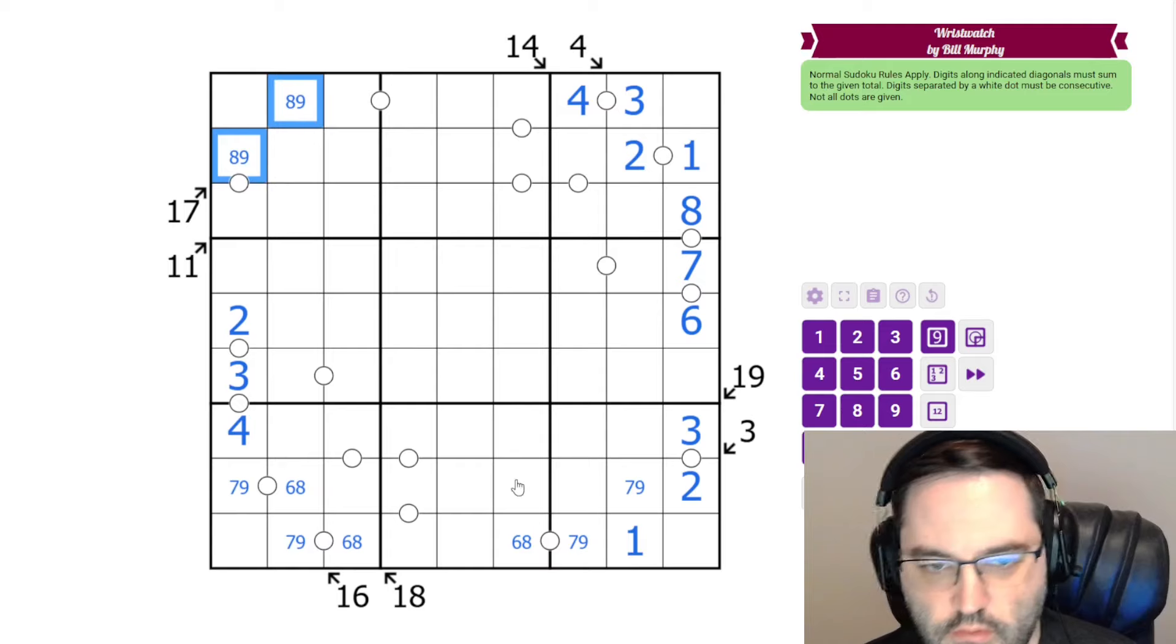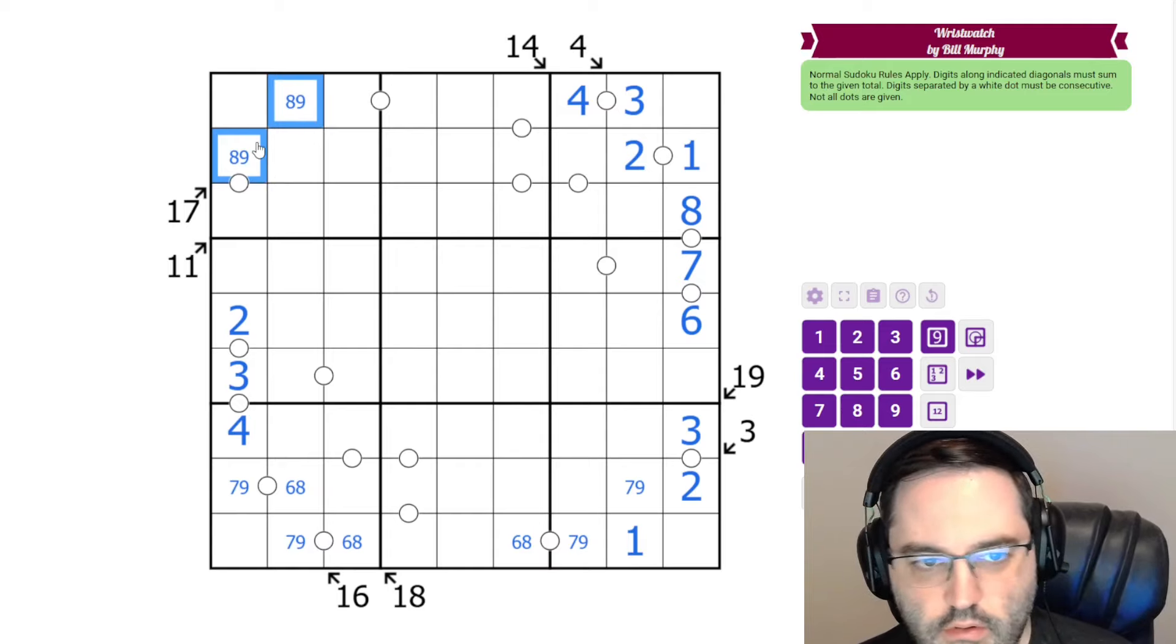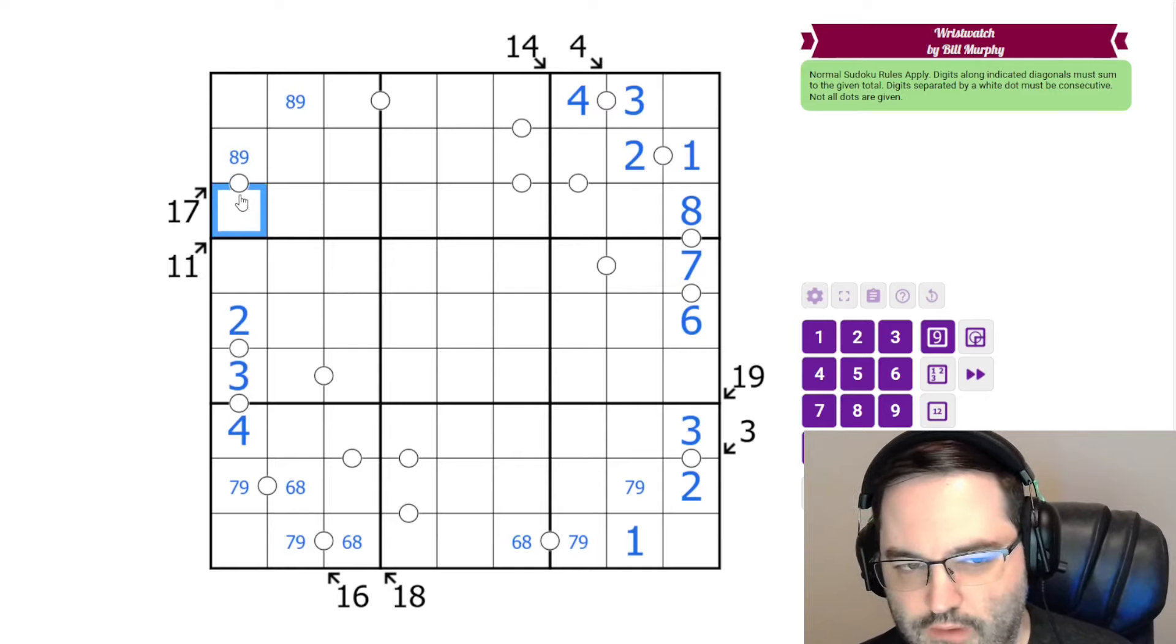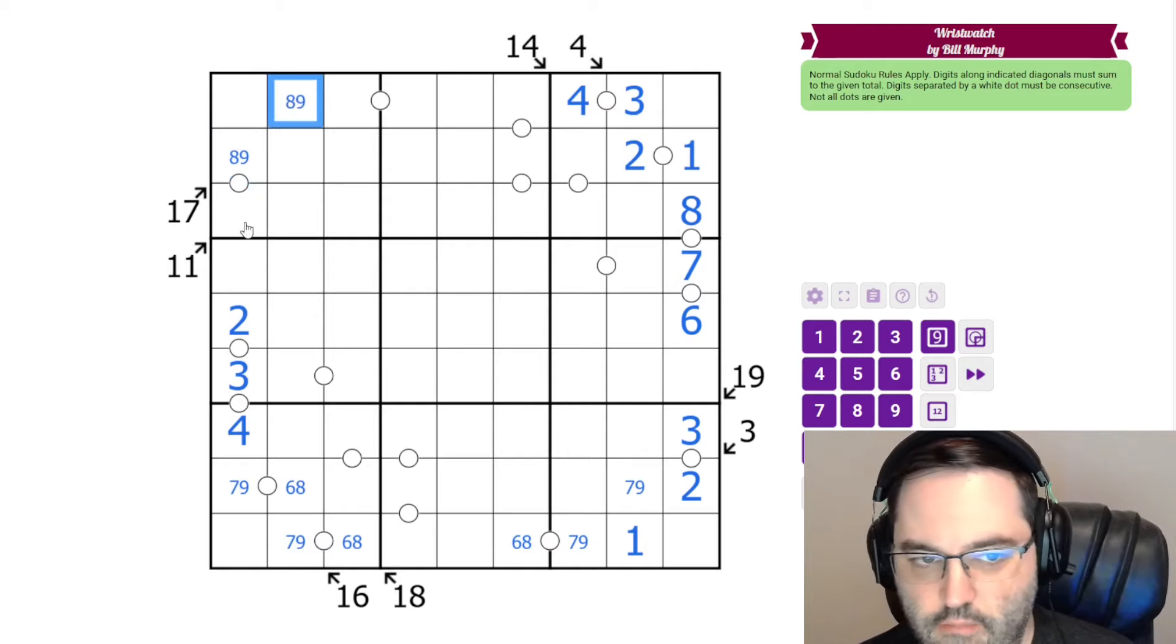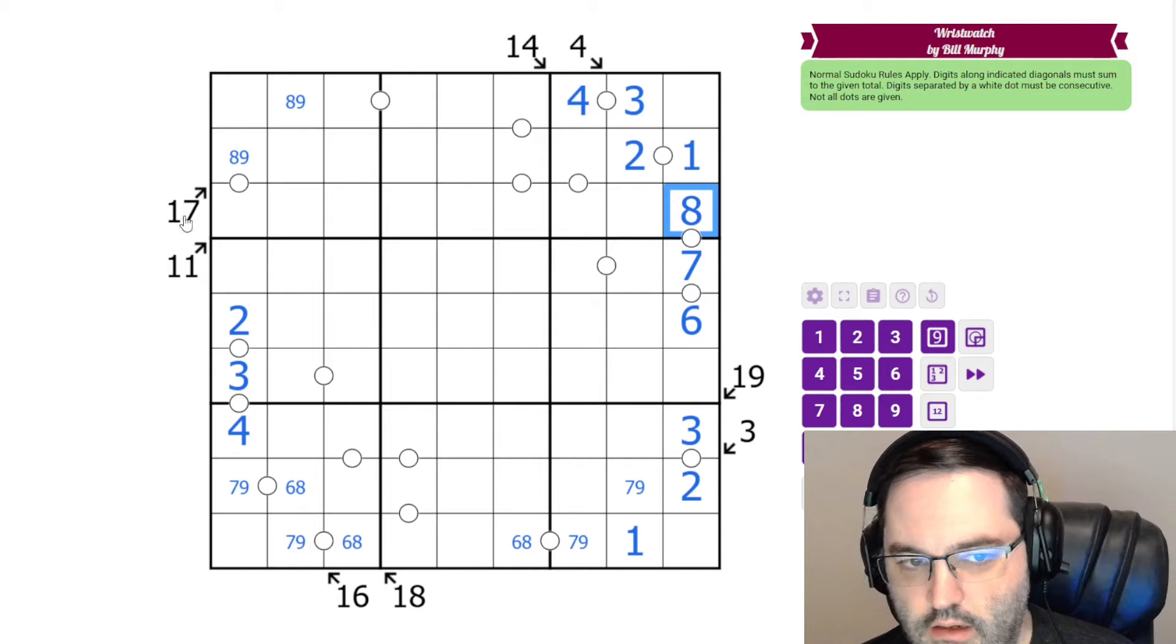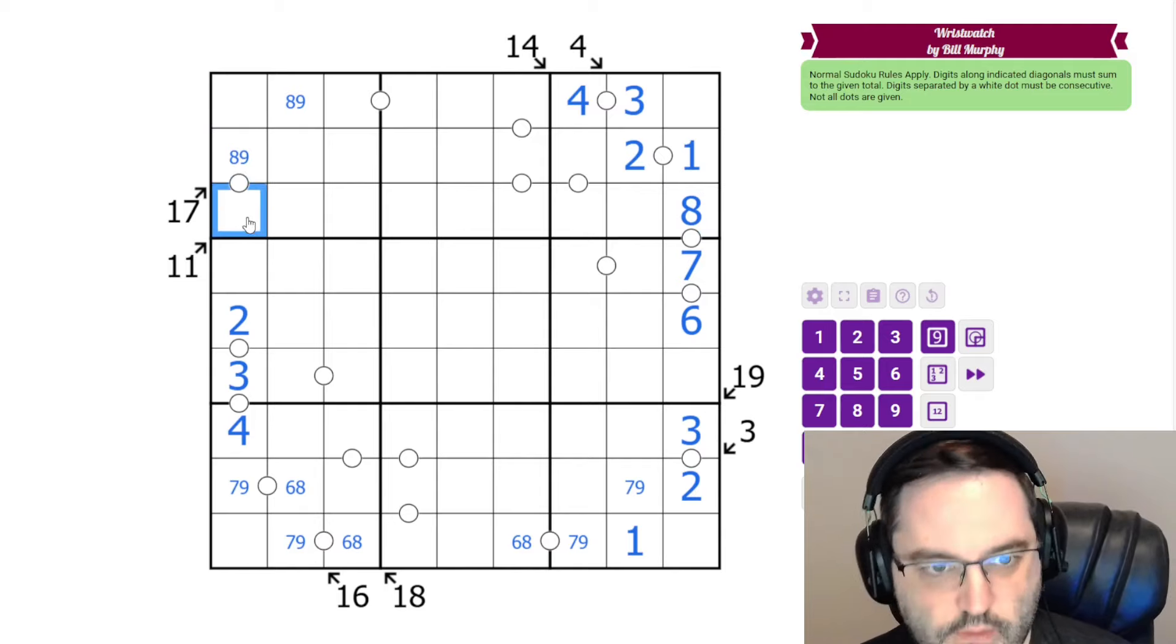This clue is similar to down here. In order to be consecutive with 8 or 9, we're going to have to put a 7 here. This can't be 9 for multiple reasons. 9 can only go next to 8, and we have an 8, 9 pair. And 8 is already in this row. So this has to be 7, 8, and 9 like that. It's going to resolve 9 and 7.